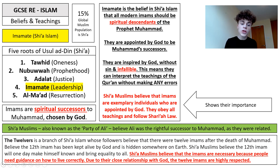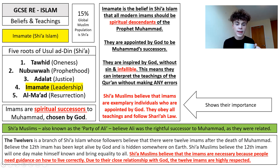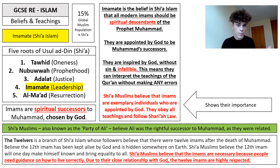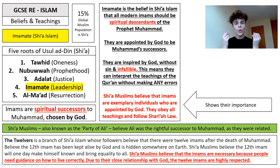The Twelvers are a branch of Shia Islam whose followers believe there were 12 imams after the death of Muhammad. They believe the 12th imam has been kept alive by God and is hidden somewhere on earth, and will one day make himself known and bring equality to all. Shia Muslims believe imams are necessary because people need guidance on how to live correctly. Due to their close relationship with God, the 12 imams are highly respected. For the exam, we need to know about the importance of Imamate in Shia Islam — the special role imams have as sources of wisdom, correct interpreters of the Quran, sinless, inspired and chosen by God, and infallible.